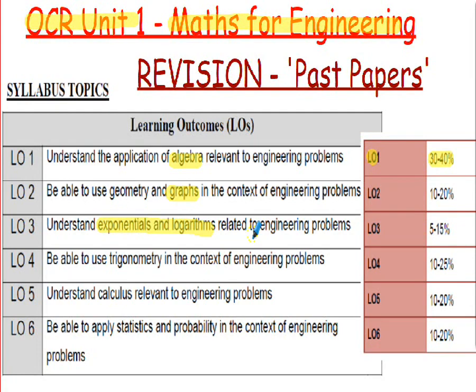Outcome four was about trig — basic sine, cosine, tan functions, Pythagoras' theorem, and the sine and cosine rule. Outcome five was calculus, covered in the last few weeks of the Easter term. Outcome six, which I gave you at the beginning of the academic year, was statistics and probability — that could be ten to twenty percent of the paper.